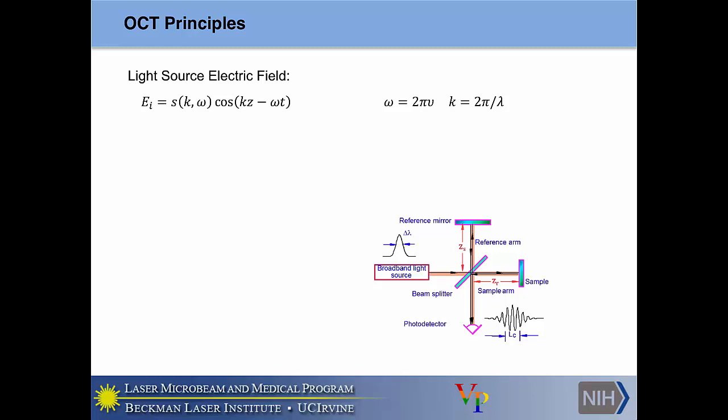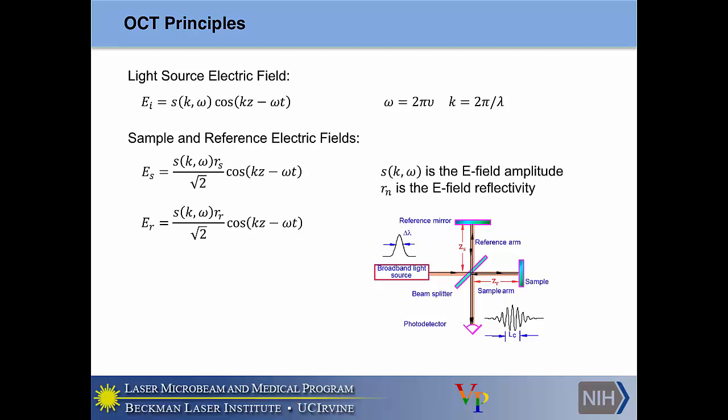It's best to begin by looking at the electric field of the illumination source. E_I is the electric field of the laser. S(k,ω) is the complex amplitude as a function of wave number and angular frequency. cos(kz − ωt) is just the wave equation you get when solving Maxwell's equations for a wave in 2D space. The light gets split into the reference arm and the sample arm. The returning electric field from the sample arm can be described with a factor of square root of 2 — because we're looking at the electric field, not power — and R_S is essentially the electric field reflectivity of the mirror, ranging between 0 and 1.